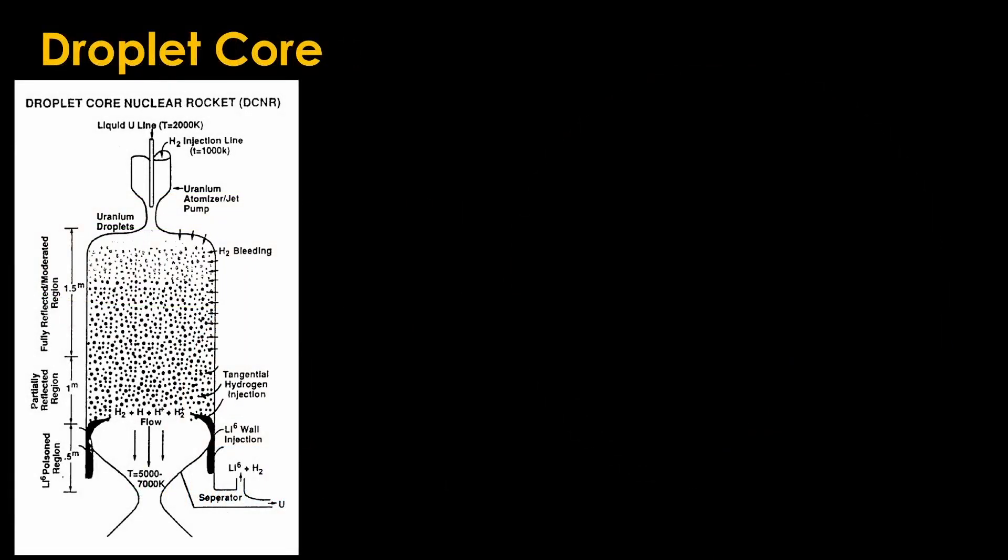And the droplet core. Here we take uranium and heat it up to 2000K. How that is done is left as an exercise to the reader. And then we push it through an atomizer. Think perfume mister so that we have a big chamber full of uranium mist. At the same time we inject hydrogen into the mist.